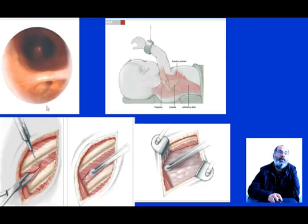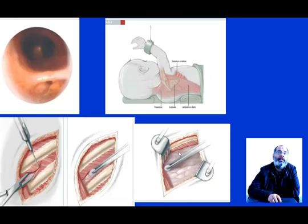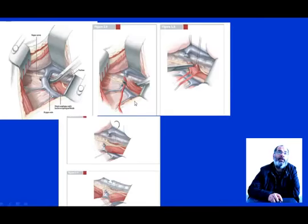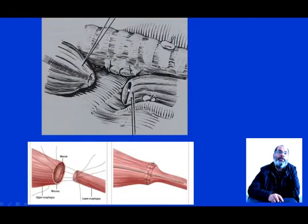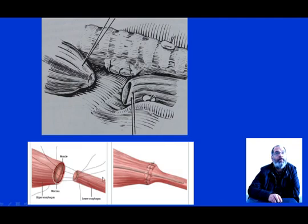We perform endoscopy to confirm the presence of the fistula, as shown in this example. We then do thoracotomy or thoracoscopy, preferring an extrapleural approach, with ligation of the distal tracheoesophageal fistula, followed by anastomosis between the two pouches. The upper pouch is very well vascularized, so we can dissect it as much as possible before performing the anastomosis.